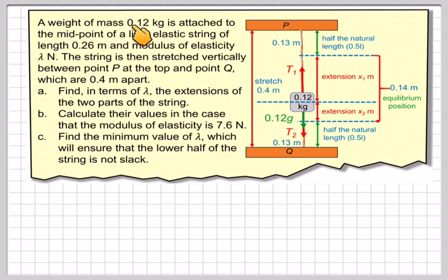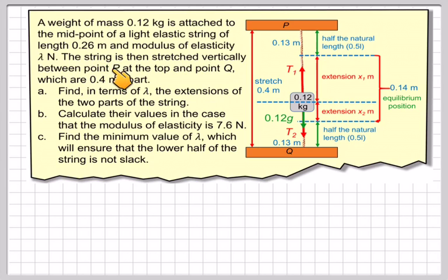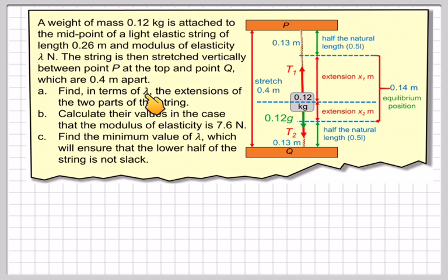This is our problem. A weight of mass 0.12 kilograms is attached to the midpoint of a light elastic string of natural length 0.26 metres, and the modulus of elasticity is lambda Newtons. The string is then stretched vertically between point P at the top and point Q at the bottom, which are 0.4 metres apart. We need to find, in terms of lambda, the extensions of the two parts of the string.